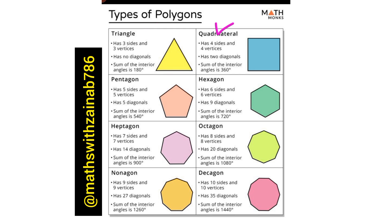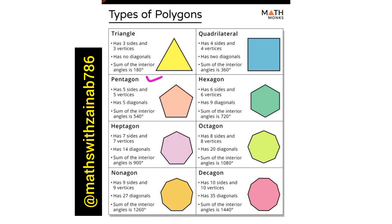The next one is a quadrilateral, which has four sides and four vertices. It has two diagonals. The sum of the interior angles is 360 degrees.